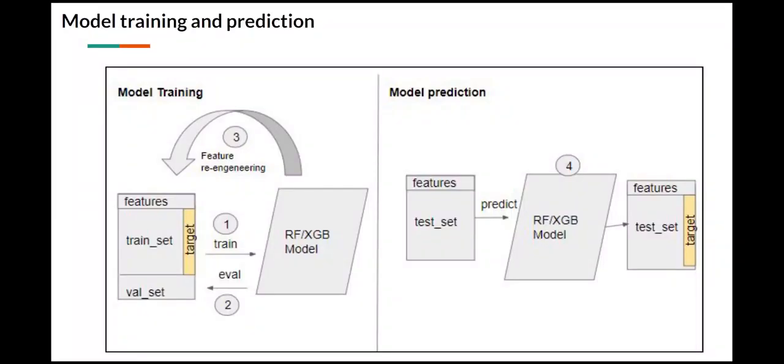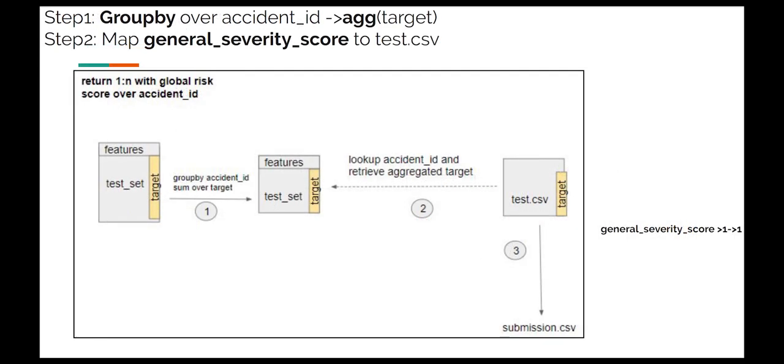I will go quickly over this slide because it follows a common approach. The model training was tested with random forest and the gradient boosted method. The results of the evaluation set were used to find better features. As soon as we had a properly trained model, the prediction followed for each vehicle. This gave us the severity prediction for all vehicles.